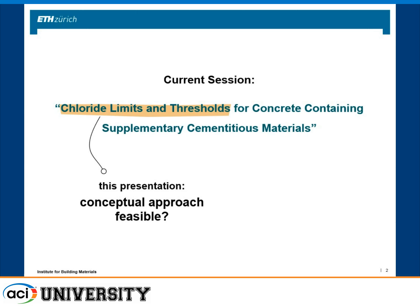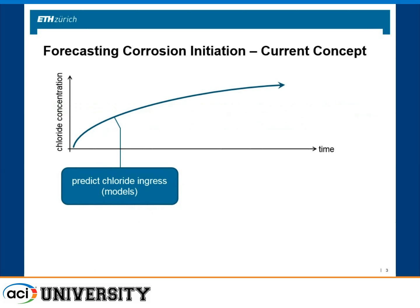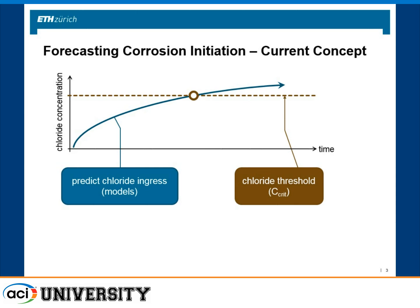The question is: can this approach provide the answers we need in making sure that structures have a certain service life? The concept has been to predict chloride ingress over time — that is the chloride concentration at a certain depth in the concrete — and with different models or measurement methods, it is possible to predict how this chloride concentration increases over time. If we know at which chloride concentration we will get corrosion, this permits predicting the time to corrosion. This is called the initiation stage.